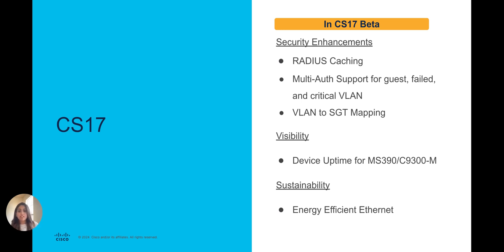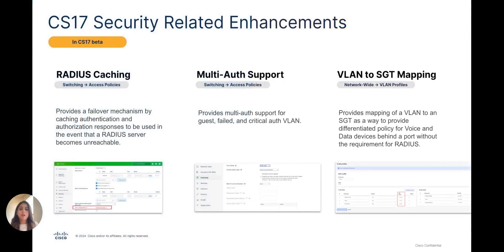On the next slide, I would like to highlight the security-related features specifically. On the Access Policies page, you now have the option to activate RADIUS caching, which serves as a failover mechanism that stores authentication and authorization responses for scenarios where a RADIUS server goes offline. With the CS17 release, we are also rolling out multi-auth support, which will now include the ability to configure guest VLAN, failed VLAN, and critical VLAN — previously these settings were grayed out for multi-auth configurations but will now become available. Finally, from the VLAN profiles page, you can map a VLAN to an SGT — that is, a security group tag or adaptive policy group — which provides a differentiated policy for voice and data devices connected to a port without the requirement of RADIUS.